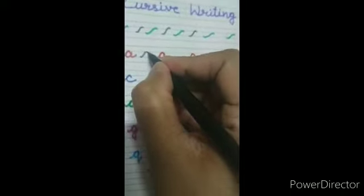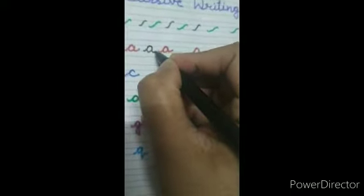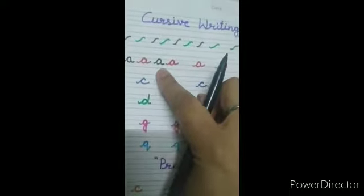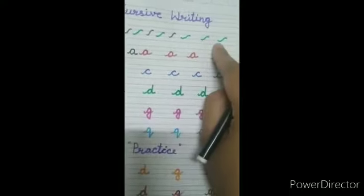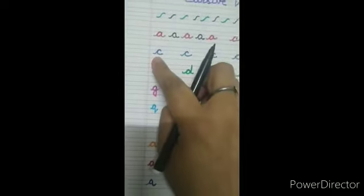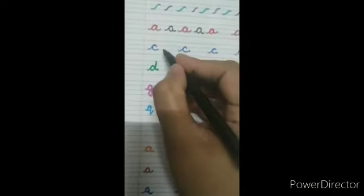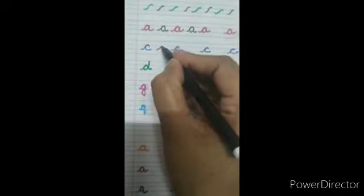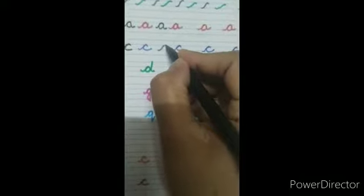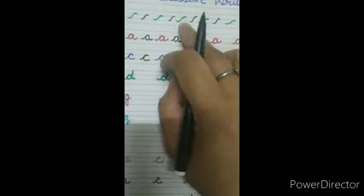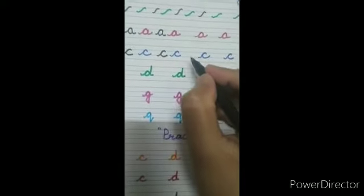As you can see, I have written so many 'a's using this pattern. Now again we can make 'c' — from the third line, up and down, and a half circle. Through this pattern only I have made 'c'.